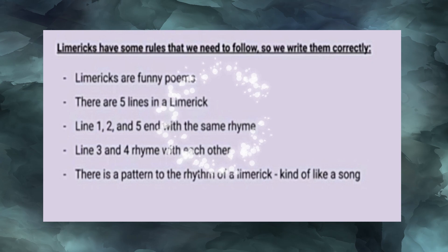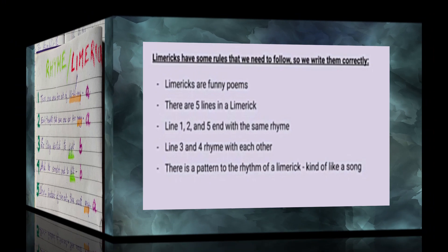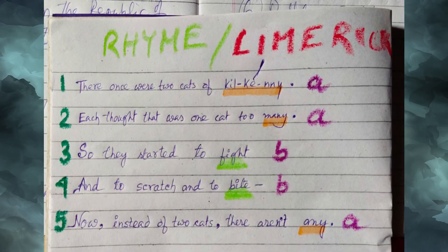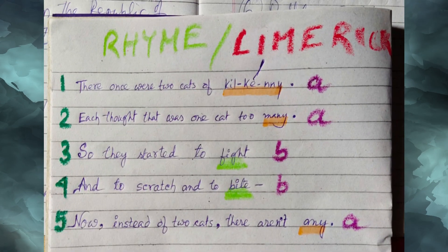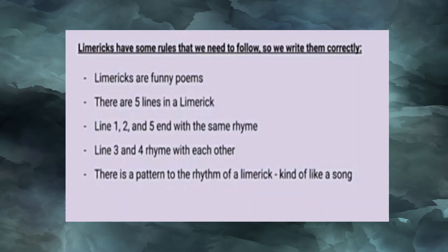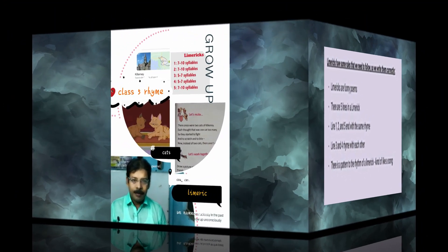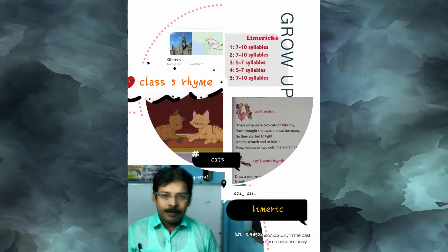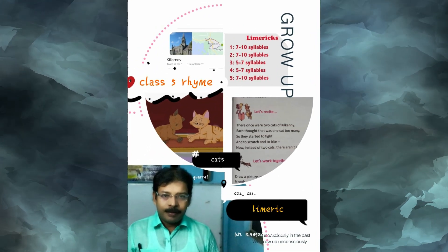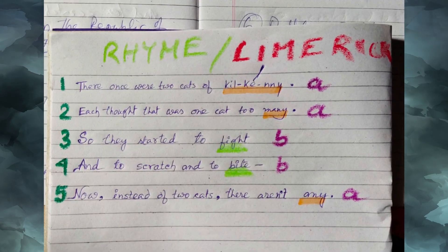Here's a limerick. What is a limerick? A limerick is a funny poem of five lines with the rhyme scheme A-A-B-A. It may be recited as a song also. The syllable count of the first and second line is 7 to 10. Third and fourth line is 5 to 7. And the fifth line, like the first two lines, is 7 to 10.